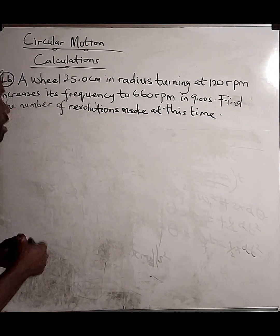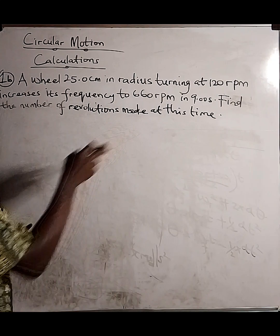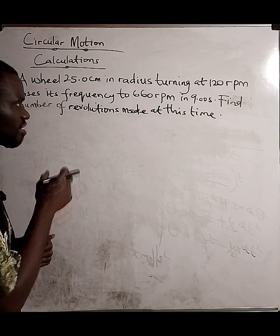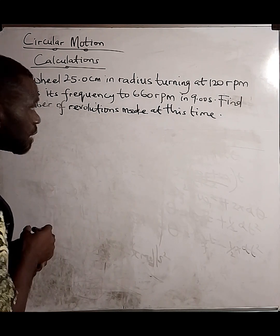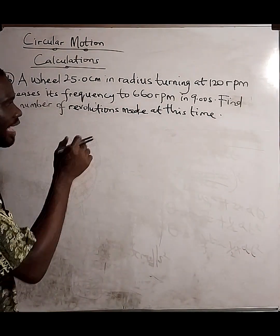The wheel, 25 cm in radius, turning at 120 rpm increases its frequency to 660 rpm in 9 seconds. Find the number of revolutions made at this time.